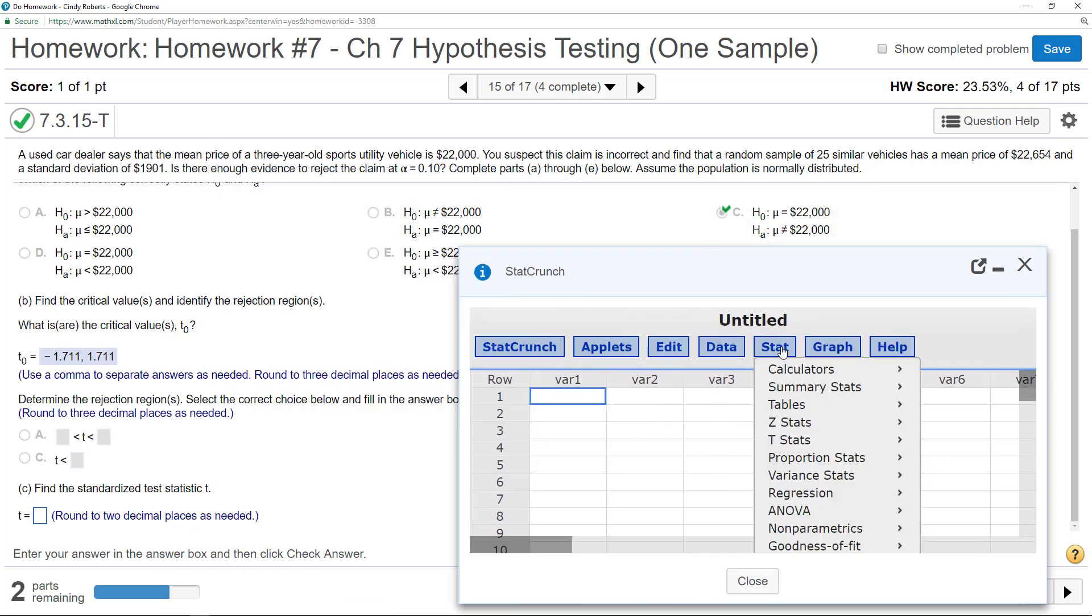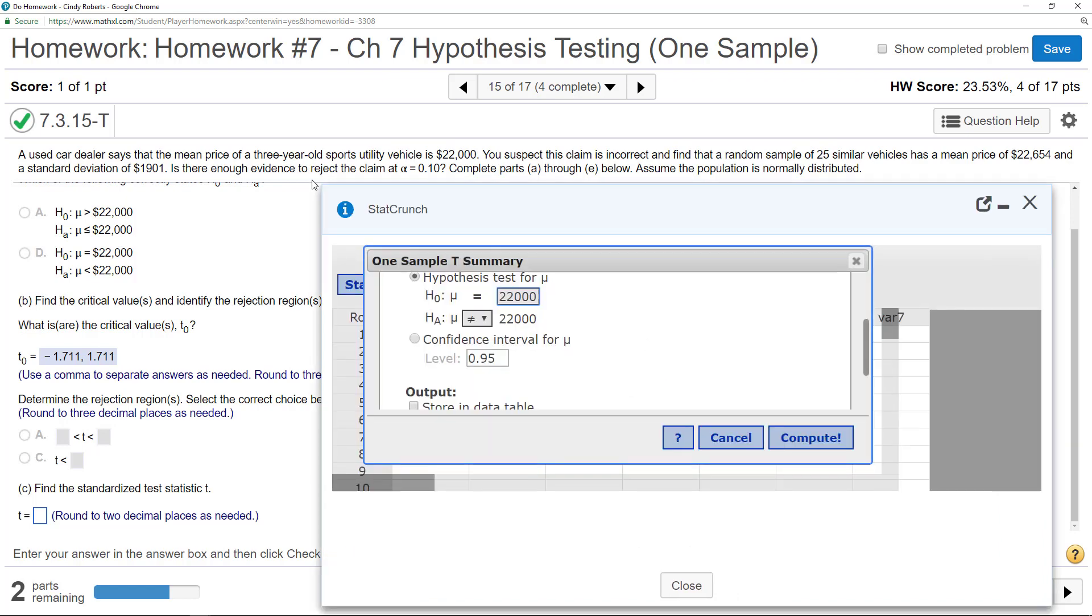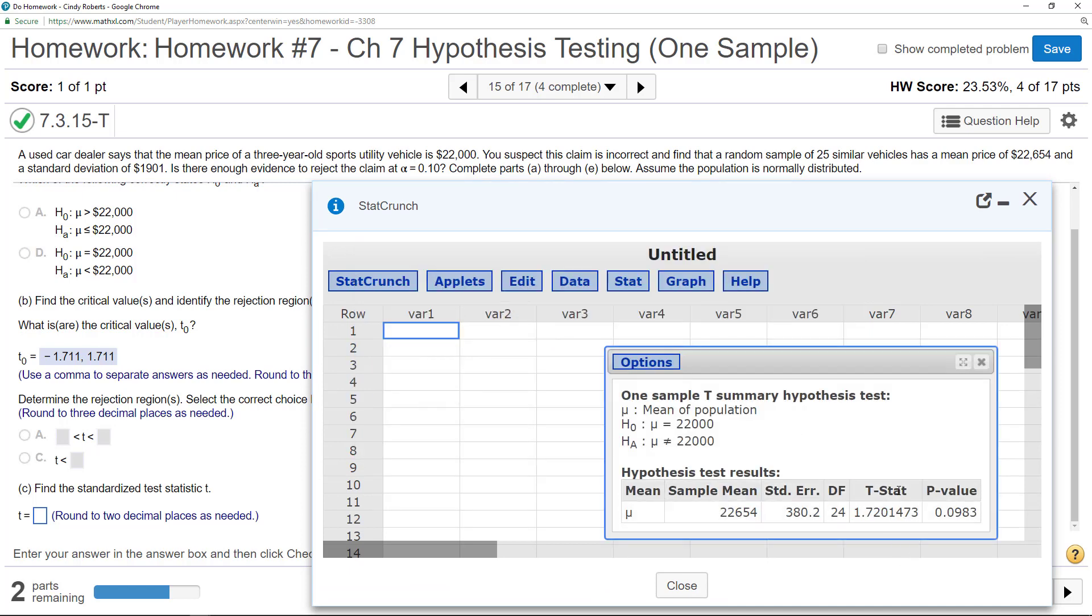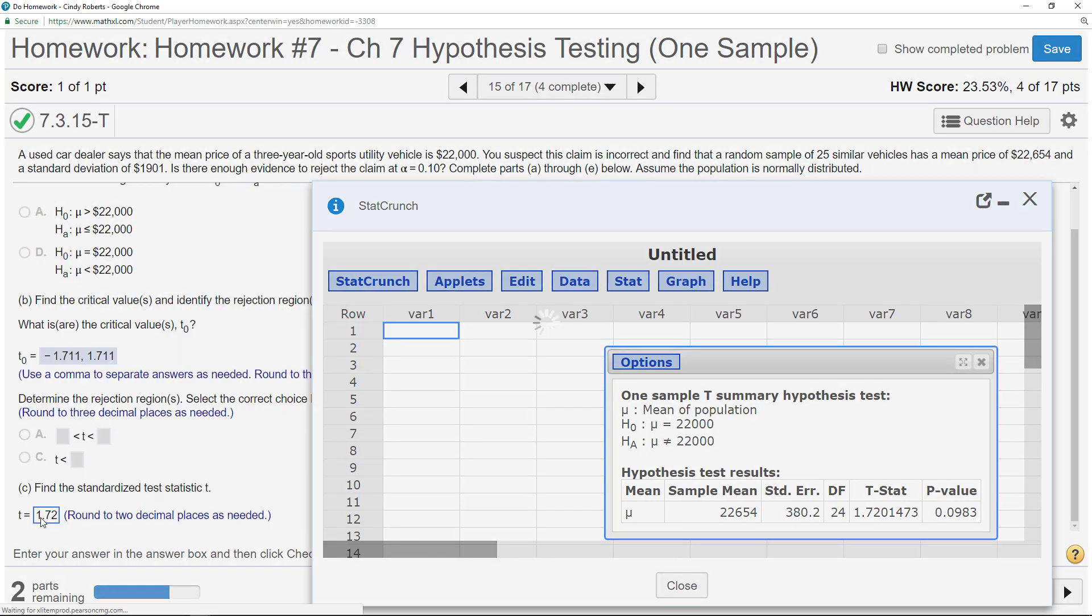So StatCrunch, I'm going to go to Stat, T, one sample. I don't see any data. I just have summary. So my sample mean is 22,654. My sample standard deviation, 1901. My sample size, 25. My hypothesis, 22,000. And make sure it's set to not equal, which it is. So I compute this, and I get my test statistic of 1.72. Two decimal places, okay.